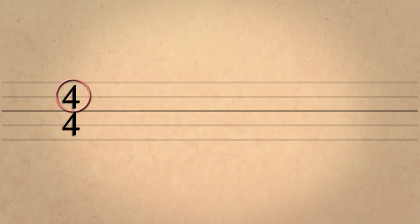The top number indicates how many regular pulses or beats are in each measure or bar. The lower number tells us what kind of note is equal to one beat.